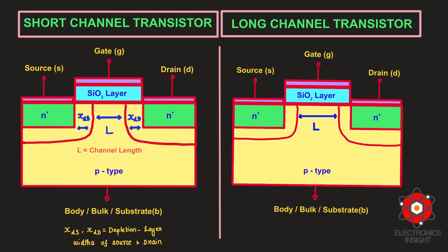In a small geometry device, the potential barrier is controlled by both the gate-to-source voltage and also by the drain-to-source voltage. Therefore, inversion is not only due to the fields from the gate, but also because of the fields existing between the source and drain.